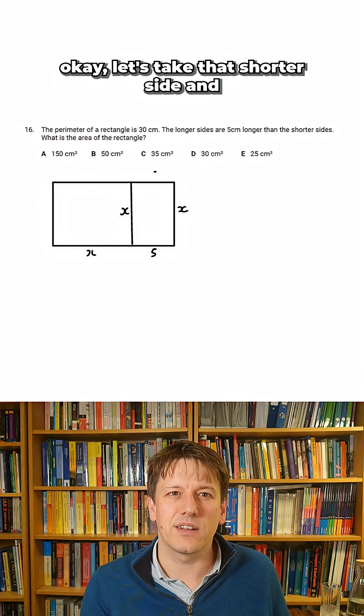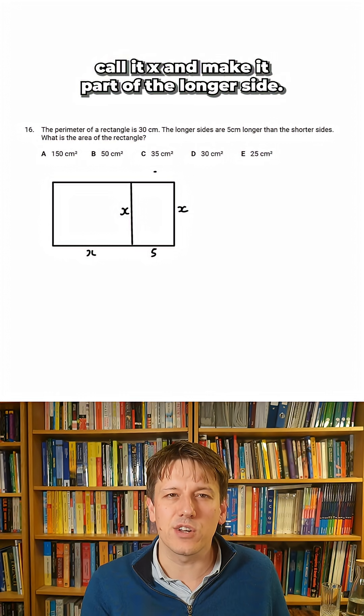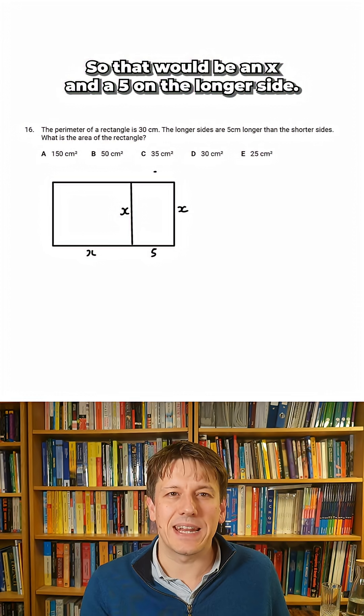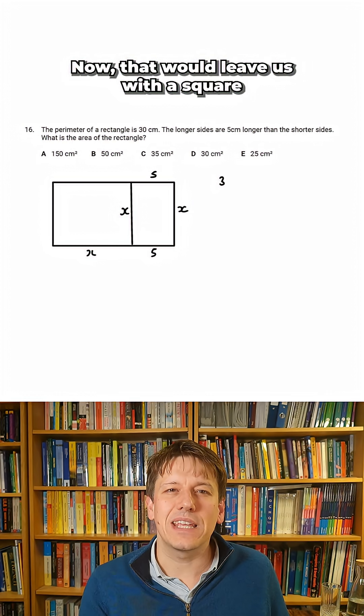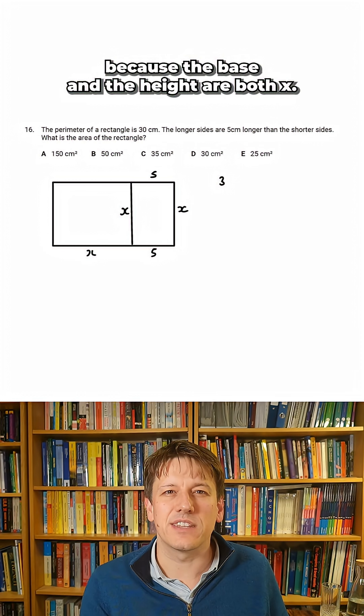because the longer side is five centimeters longer than the shorter side, I could say, okay, let's take that shorter side and call it X and make it part of the longer side. So there would be an X and a five on the longer side. Now that would leave us with a square then on the left because the base and the height are both X.